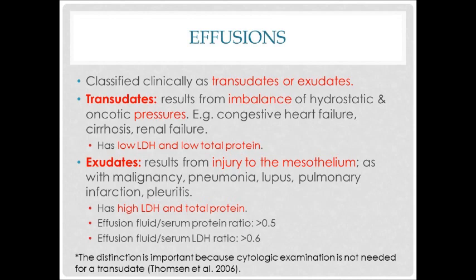For effusion, it can be classified as transudate or exudate. I'm sure you all still remember the difference between those two, as you learned from year 2 and year 3. Here, I will briefly explain the difference. Transudate results from an imbalance of hydrostatic and oncotic pressures — it has low LDH and low total protein. While exudate results from injury to the mesothelium — it has high LDH and high total protein.